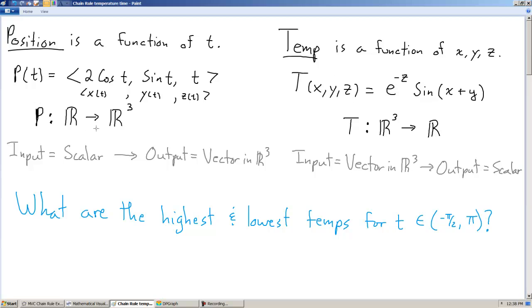Now, there's this mapping notation I've written down here. P is a function that maps real numbers to vectors in R3. That's what this R to R3 means. And T is a function that maps vectors in R3 to real numbers. Again, just so you get used to this notation.